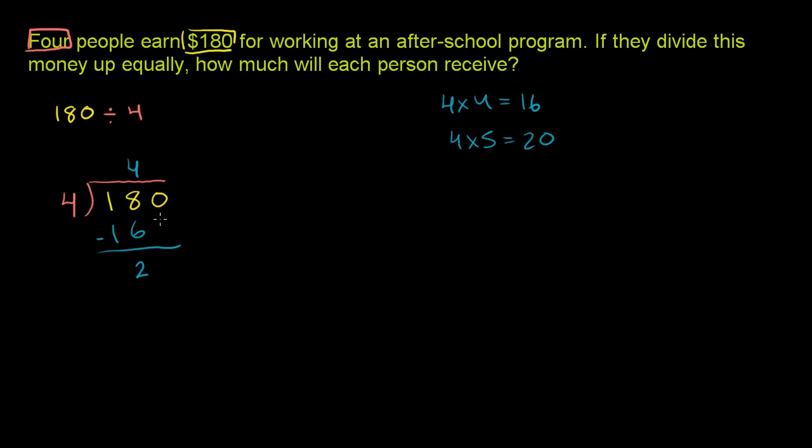Now we want to bring down this 0. Because we really said 4 goes into 180 40 times, because it's in the tens place. 40 times 4 is 160. 180 minus 160 is 20. That's why we bring down the 0.